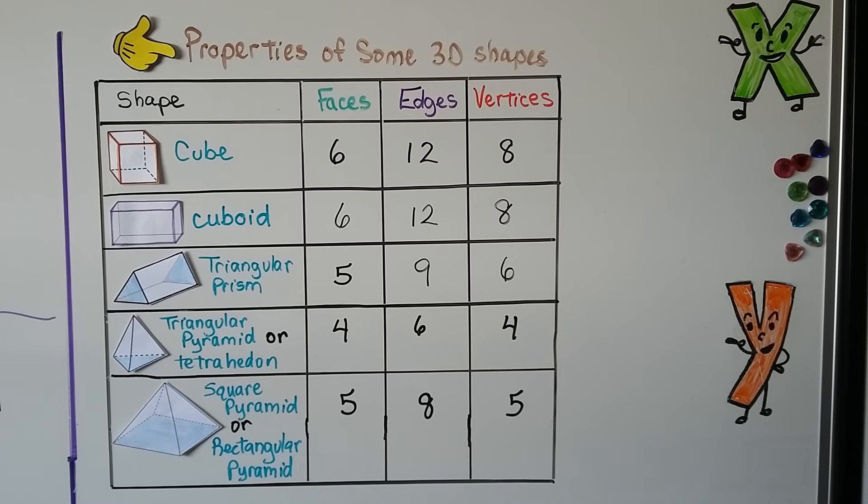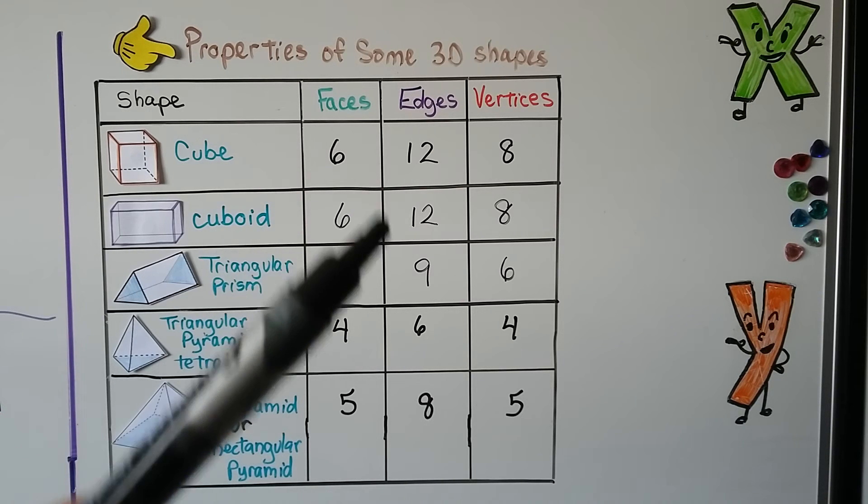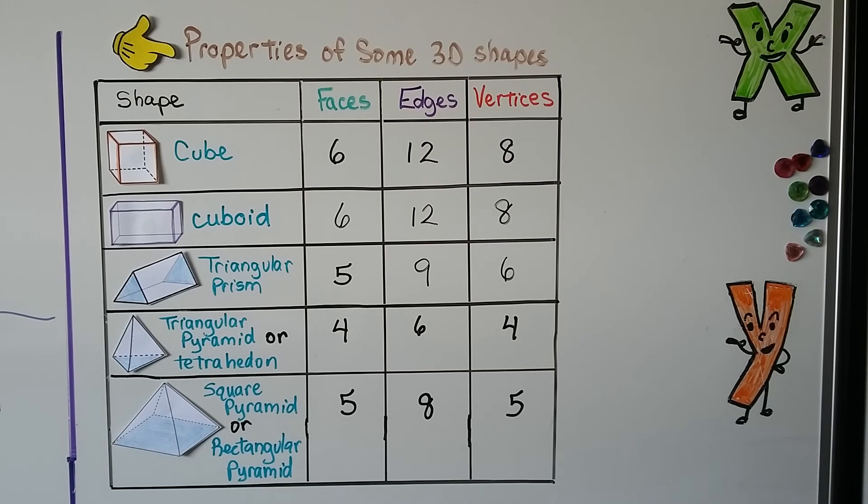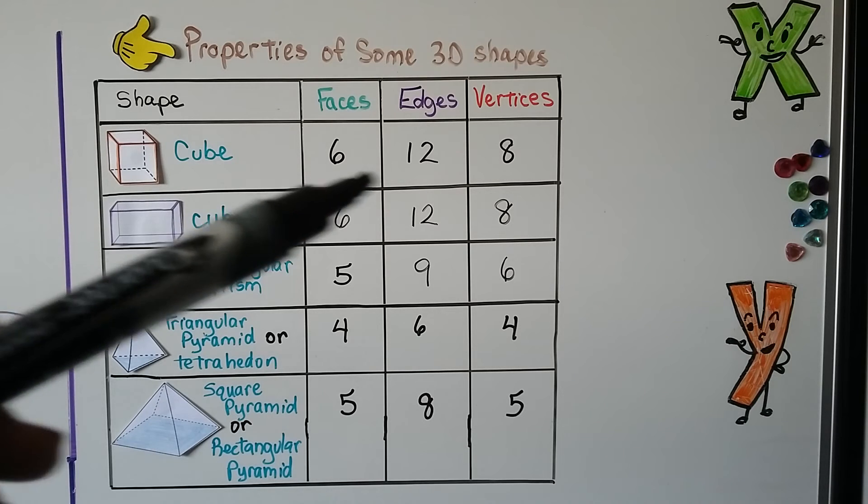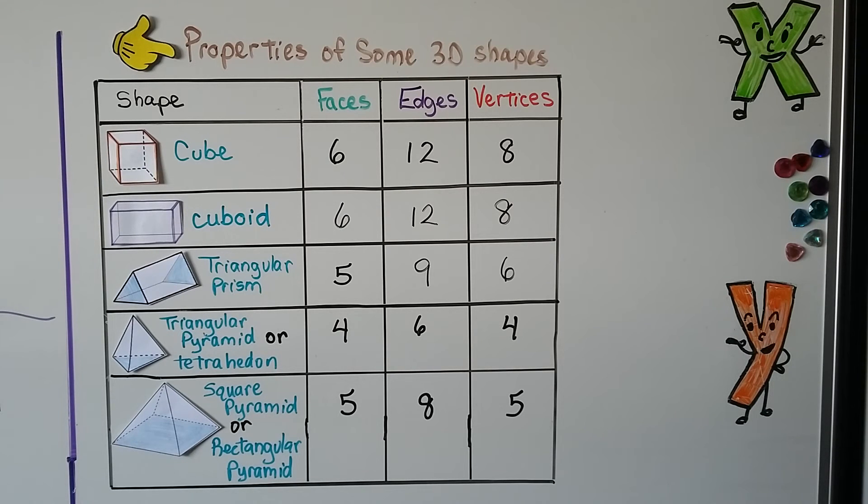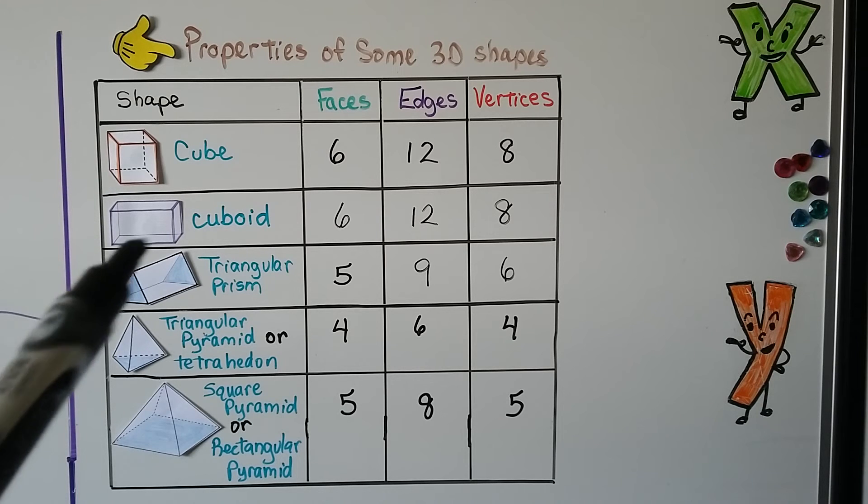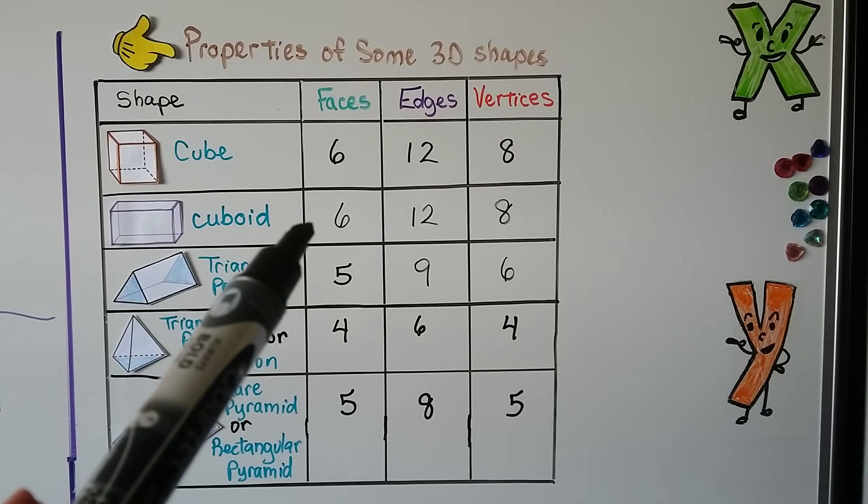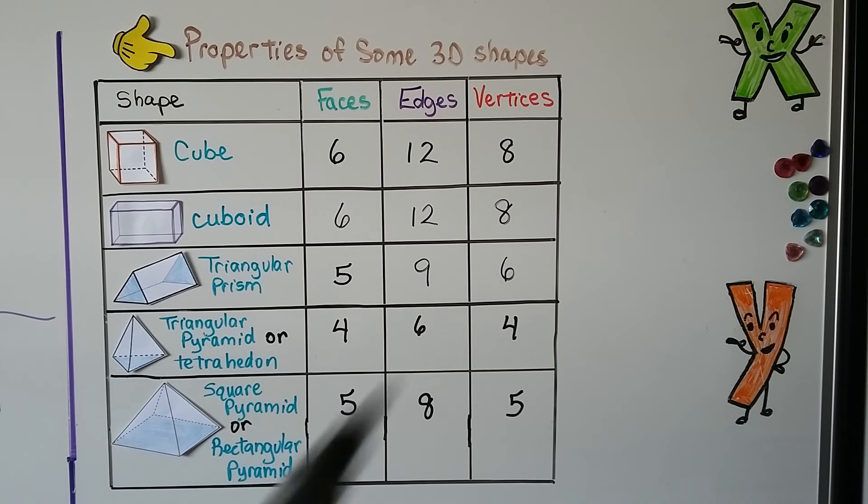So here we have properties of some 3D shapes. We've got their shape, how many faces they have, how many edges they have, and how many vertices they have. And the cube has 6 faces, 1 in the front, 1 in the back, 4 going around. There are 12 edges connecting those faces, and there's 8 vertices, 8 corners. And the cuboid has the same as the cube, 6 faces, 12 edges, and 8 vertices.